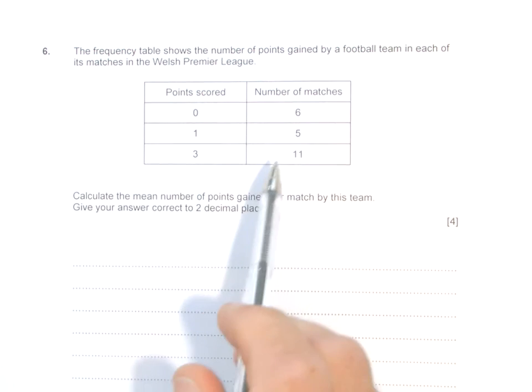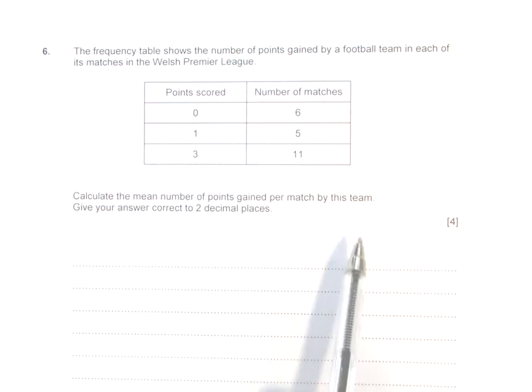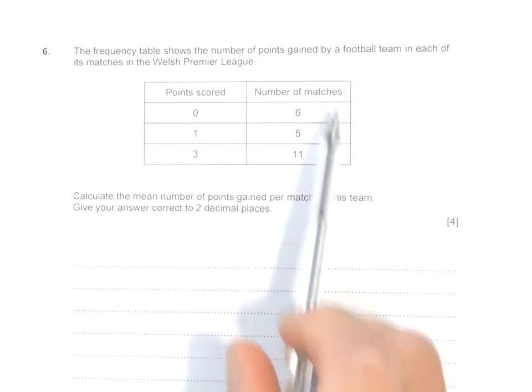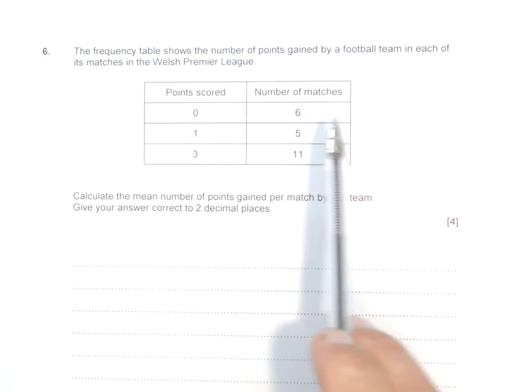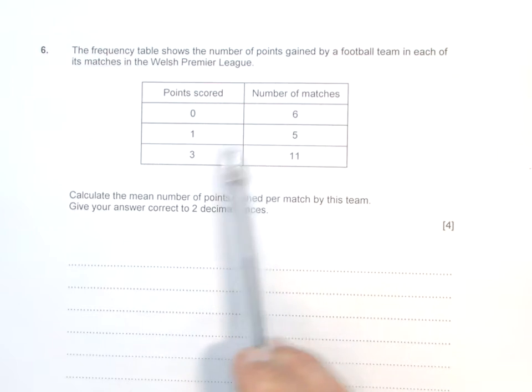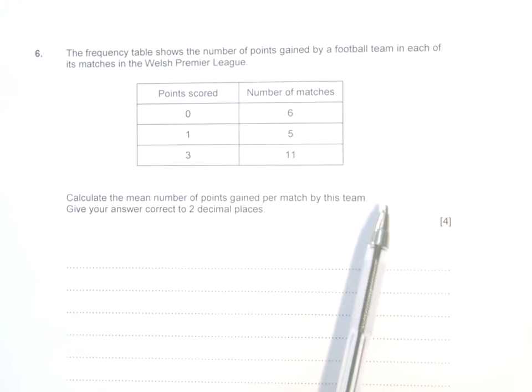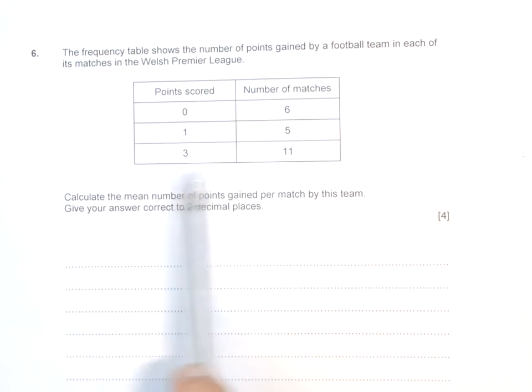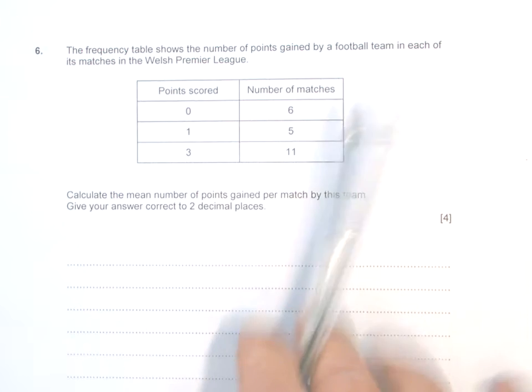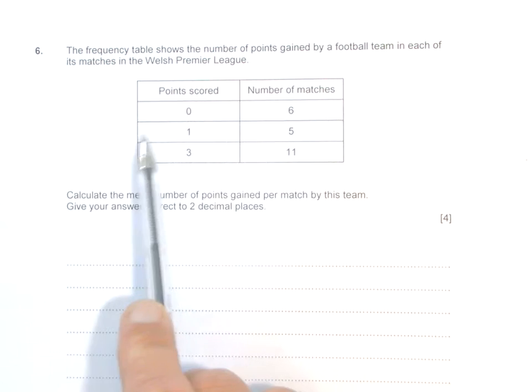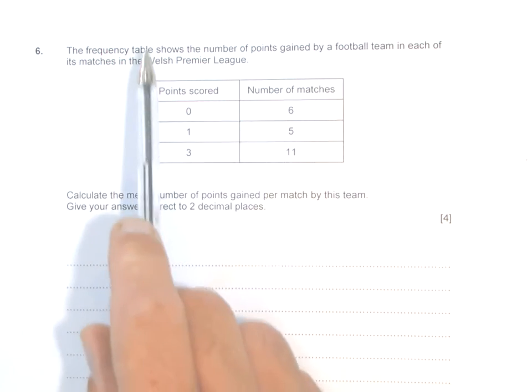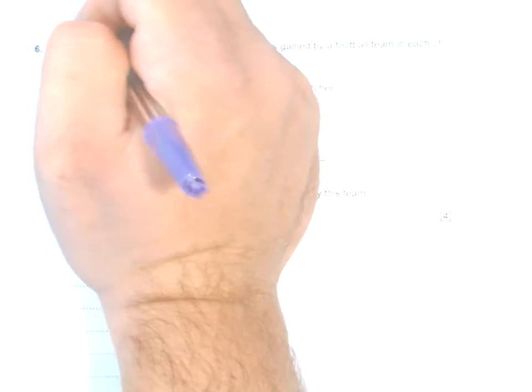When we talk about mean, we know about the idea of adding them all up and dividing by how many there are. In this case, we haven't got a list of numbers; they're in a table format. Usually they're in the table because there's lots of information, lots of data. If you think about it, it would be quite awkward if you had a list here.